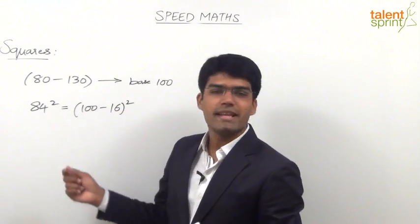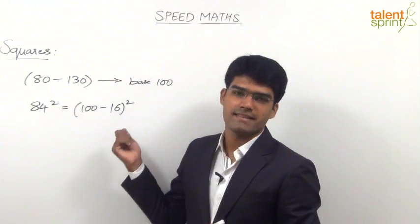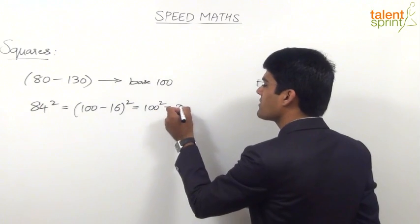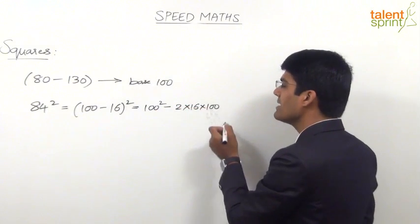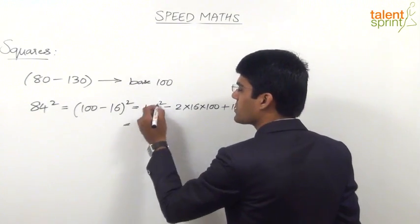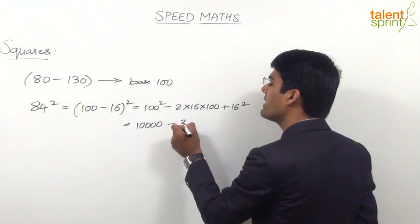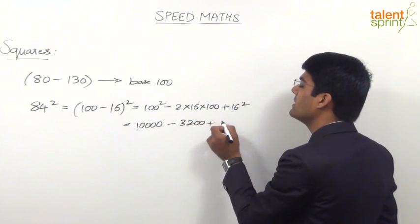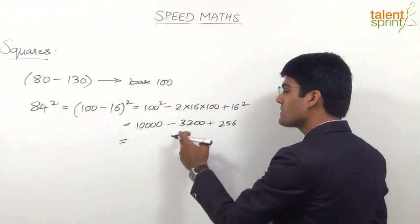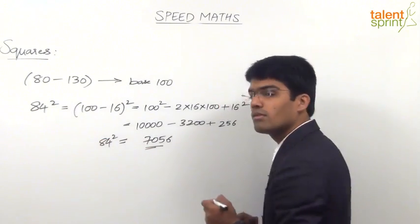Always take it as 100 minus 16. If we expand this, we get the first term as a squared — that is 100 squared — minus 2 into 16 into 100, plus 16 squared. So that gives us 10,000 minus 3,200 plus 256. 10,000 minus 3,200 is 6,800, and 6,800 plus 256 is 7,056. So 84 squared equals 7,056.